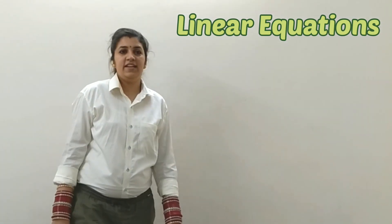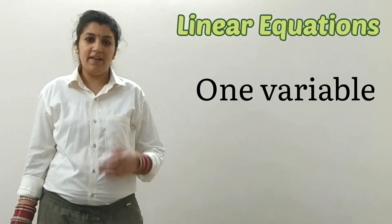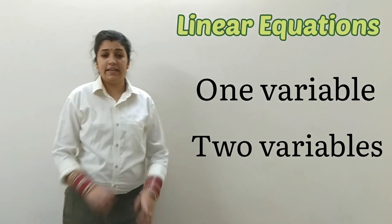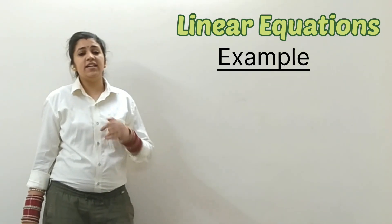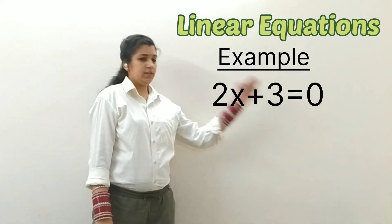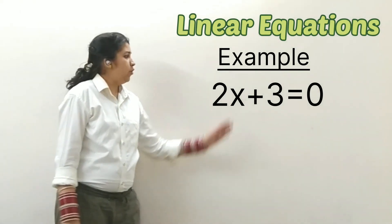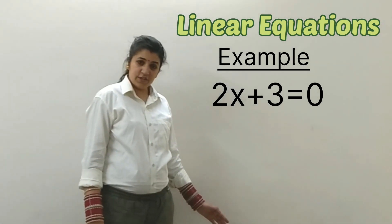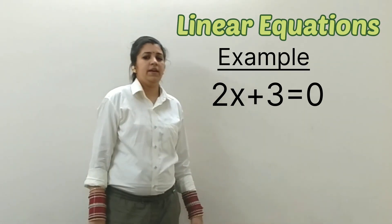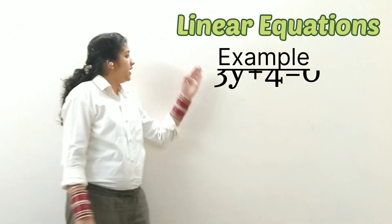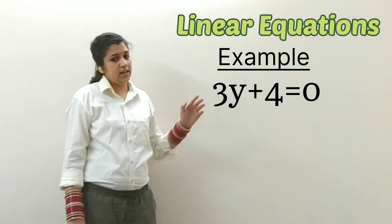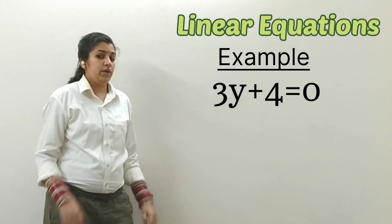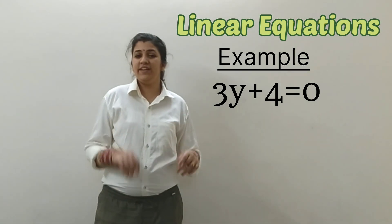Linear equations. We will discuss linear equations in one variable and linear equations in two variables. First, we will talk about linear equations in one variable. Just take an example: 2x plus 3 is equals to 0. Here, only one variable — that is x — we can see. So this equation is a linear equation in one variable. Take another example: 3y plus 4 is equals to 0. Again, here also one variable, that is y. Now we will talk about linear equations in two variables.